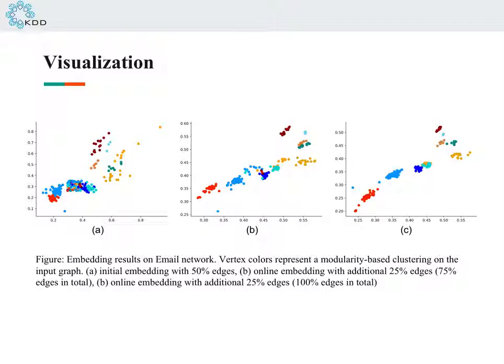be beneficial for lots of downstream applications such as link prediction, anomaly detection, and community detection. In our paper, we focus on anomaly detection.